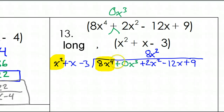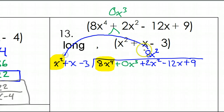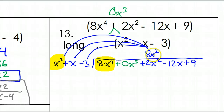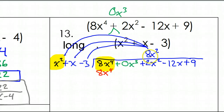x squared times 8x squared gives me 8x to the fourth power — that's why we put that up there. Once you have that first term, you take it and do the distributive property over the thing you're dividing by. So I take this 8x squared and distribute: 8x squared times x squared is 8x to the fourth power. 8x squared times x is 8x to the third power. And 8x squared times negative 3 is negative 24x squared.